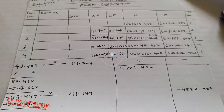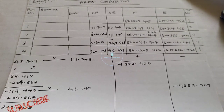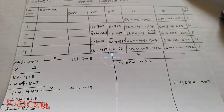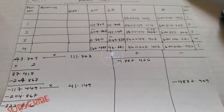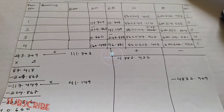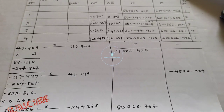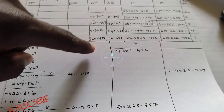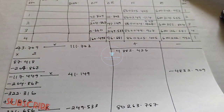Before you start, you will have to do the back computation of those coordinates. The back computation will give you the latitude and the departure, which is your delta northing and your delta easting. You will need to repeat your first point to get a closed loop. To check if your latitude and departure are correct, the algebraic sum of all your delta northings and the algebraic sum of all your delta eastings must be equal to zero.